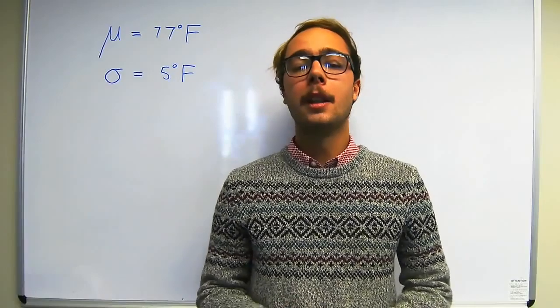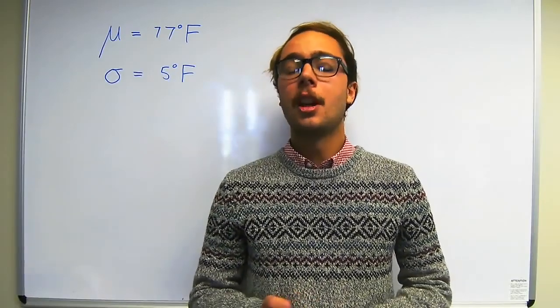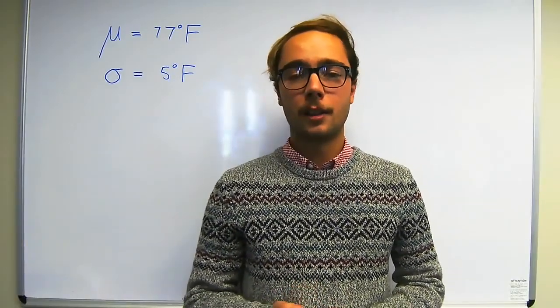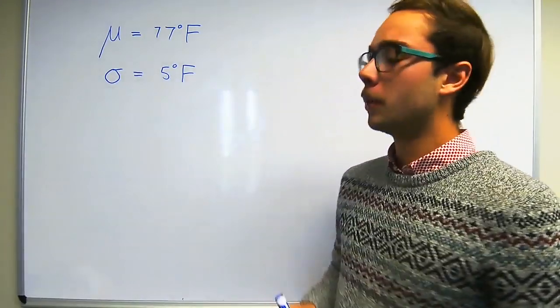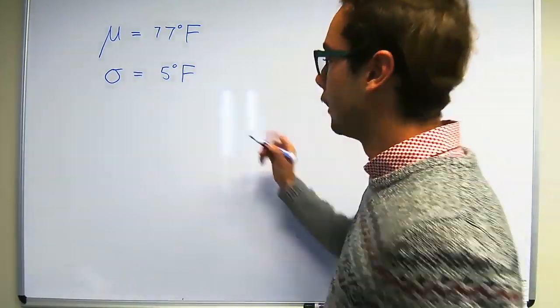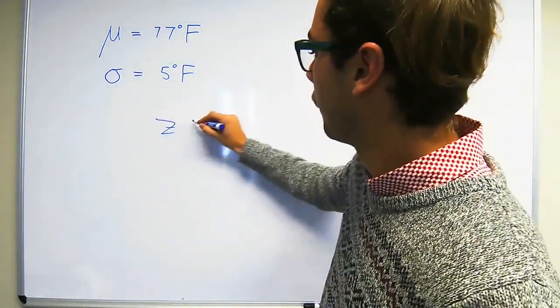So the first question asks what is the probability of observing a temperature higher than 83 degrees Fahrenheit. Because this variable is normally distributed we are going to use the z value. The formula for that says: